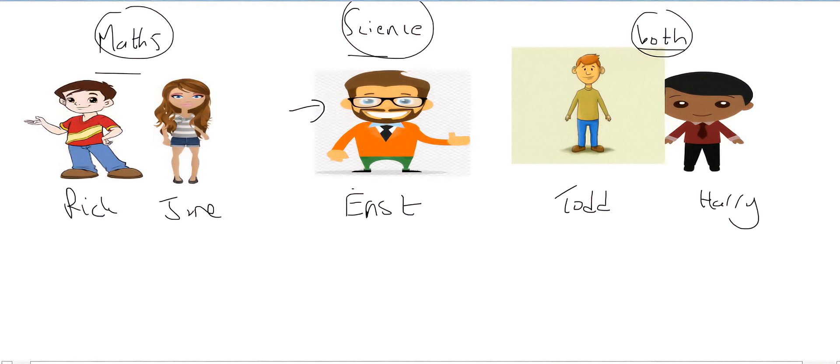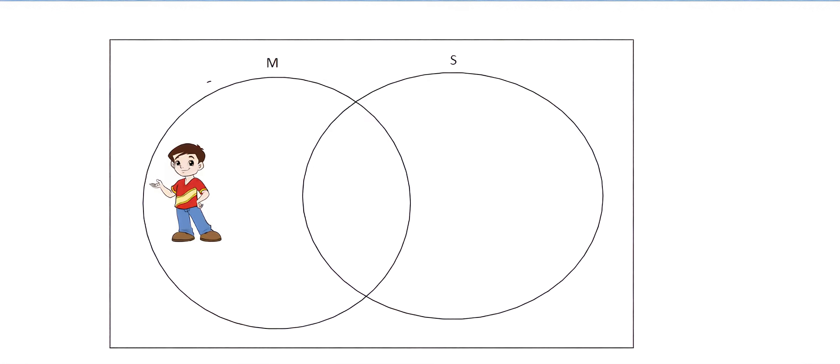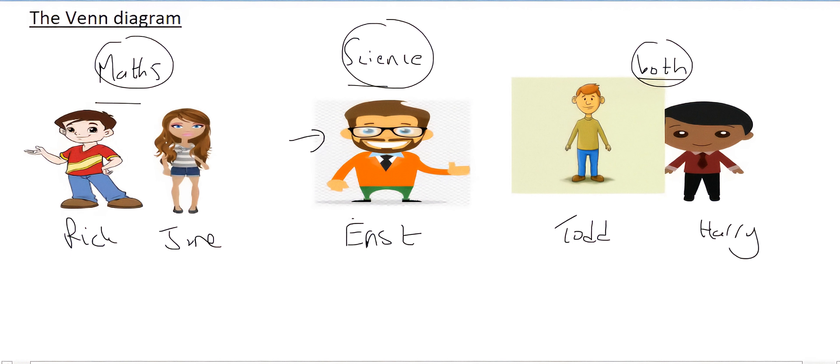So if we had to start off with Rick, who's this guy over here, he only does maths. So if he's going to go to those circles, he has to land up at the following place, because that section is only for maths only. Let's go fetch some other people. Let's go fetch Todd. So Todd is over here.